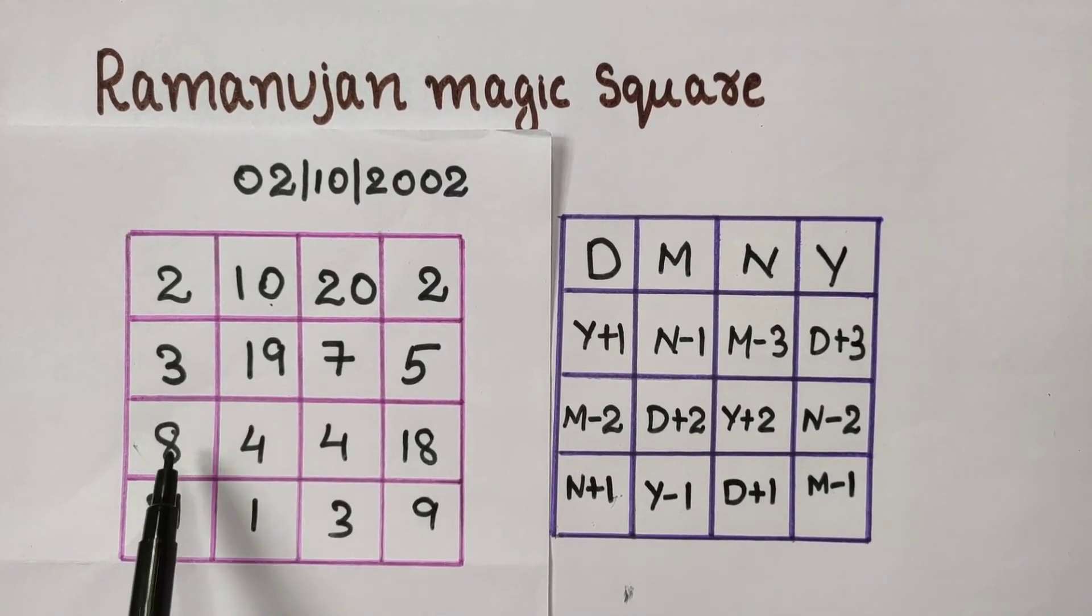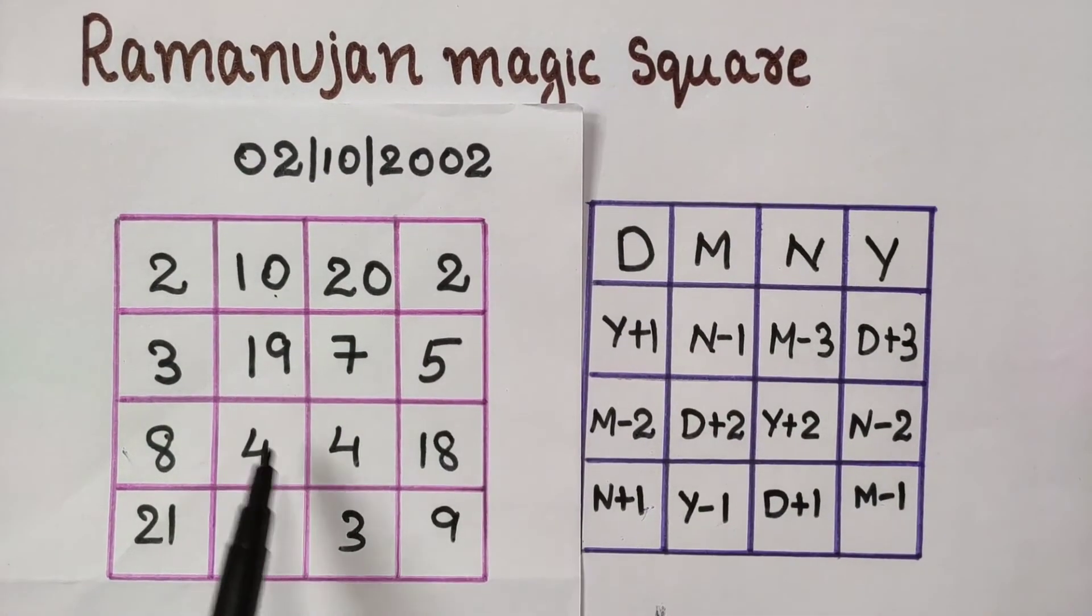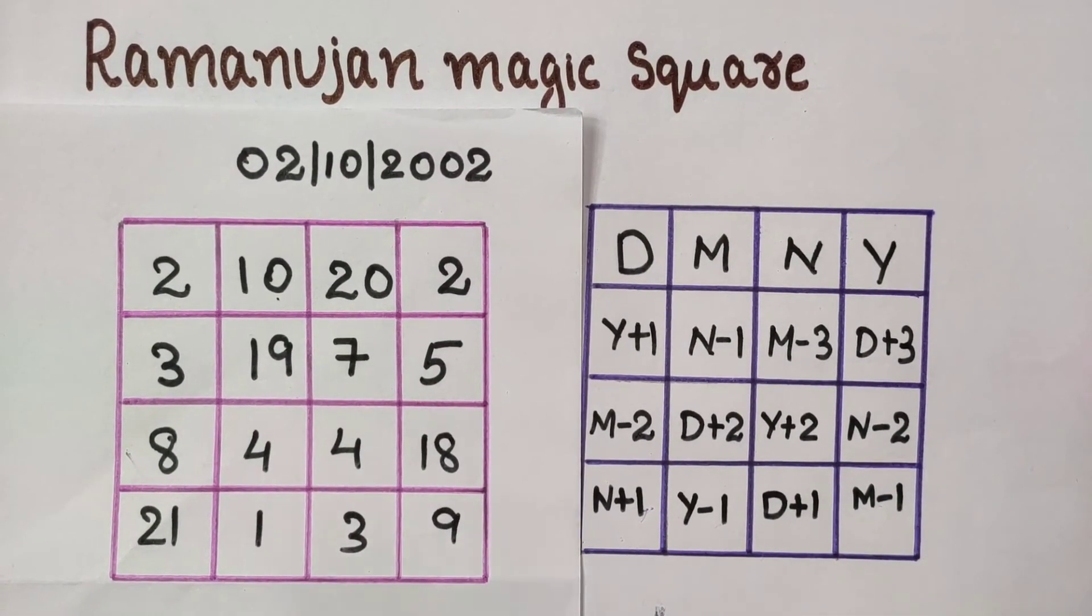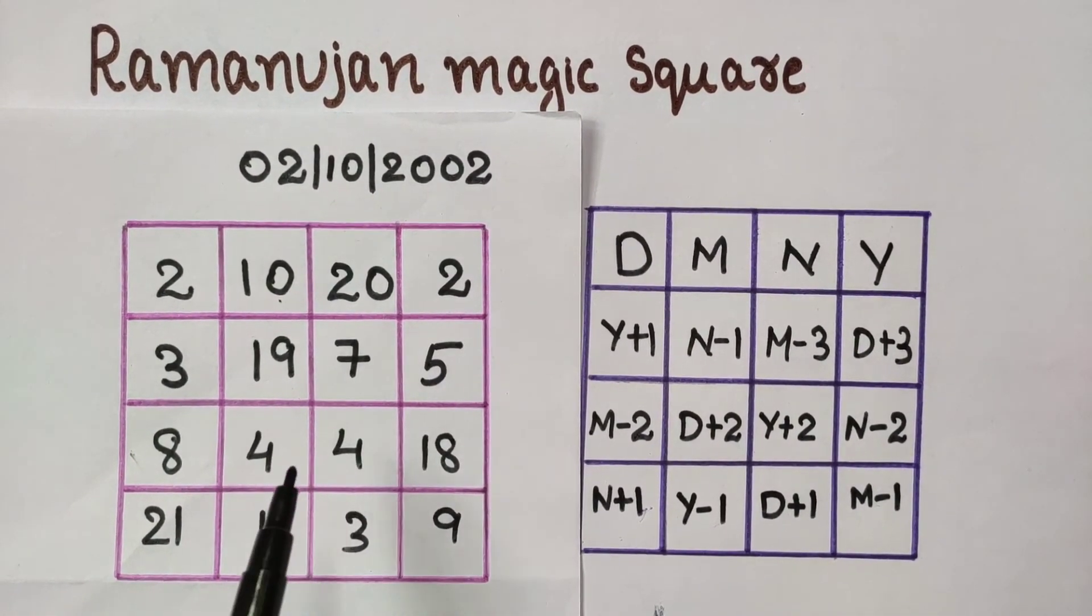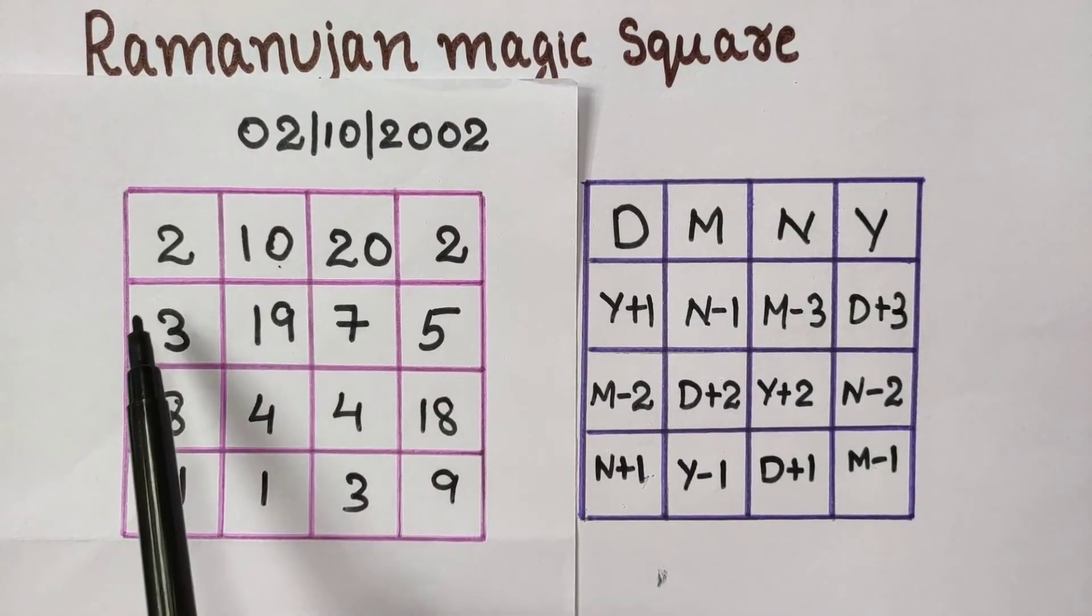Sum of numbers in central square, that is 19, 7, 4, and 4 is 34. Sum of 10, 3, 18, 3 is 34.